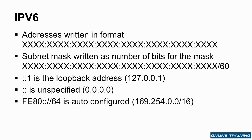Just like with IPv4, there is a loopback address — it's just double-colon one, and double-colon means unspecified. There is also auto-configured addressing, which we'll discuss more.